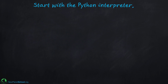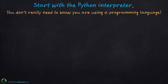Let's start with a Python interpreter. Python is an interpreted language, and that is why it's so easy to use as a calculator. You don't need to compile things to run them — you just get instant response. You don't even really need to know that Python is a programming language; it's just a little tool for doing calculations.